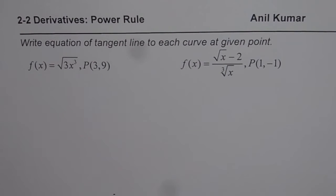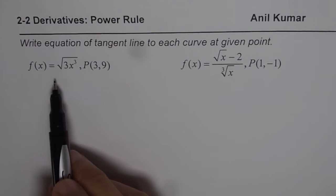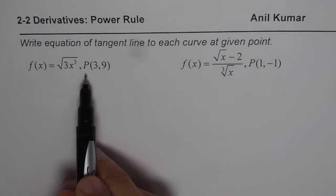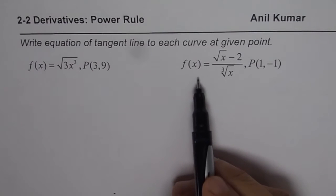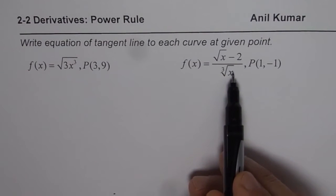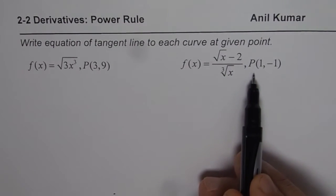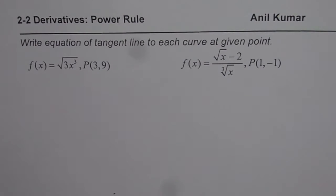I am Anil Kumar and here are two practice questions for you. You need to find the equation of the tangent line to each curve at the given point. The first function is f(x) = √(3x³) at the point (3, 9). The second one is (√x - 2) divided by ∛x at the point (1, -1). I have purposely taken these radical functions since some of my students have difficulty working with them. We will go through some steps and then you will be able to write down the equation of the tangent line.